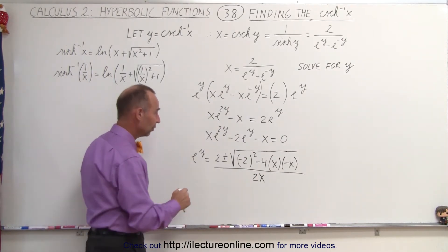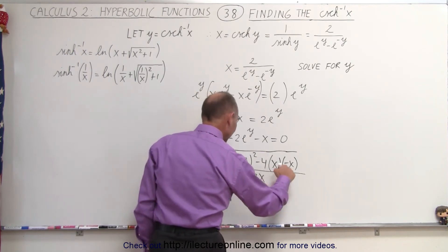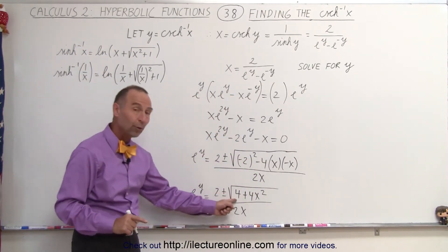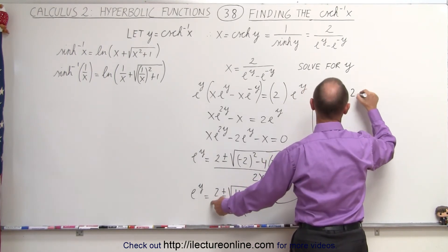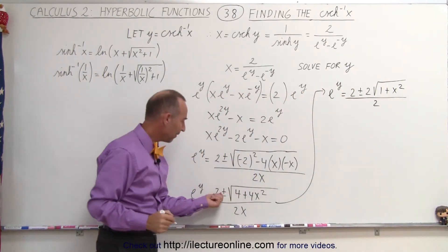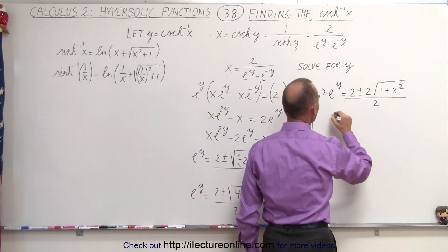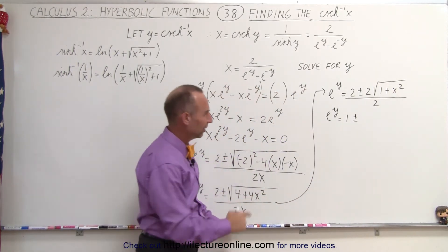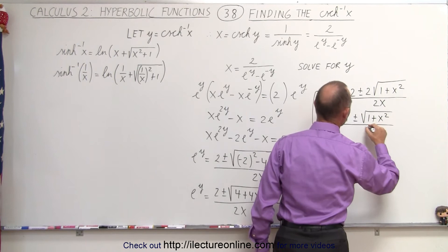Now we need to simplify that. We get e to the y is equal to 2 plus or minus the square root of 4, and minus times minus becomes plus 4x squared, the whole thing divided by 2x. We realize we can factor out a 4 here — the square root of 4 is 2. So this can now be written as e to the y is equal to 2 plus or minus 2 times the square root of 1 plus x squared, all divided by 2. We can simplify by dividing the denominator into the numerator, giving e to the y is equal to 1 plus or minus the square root of 1 plus x squared divided by x.